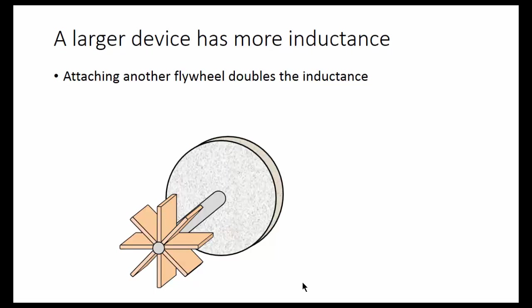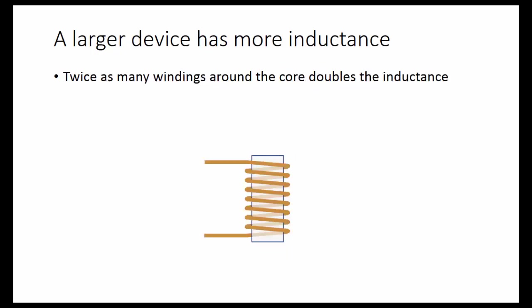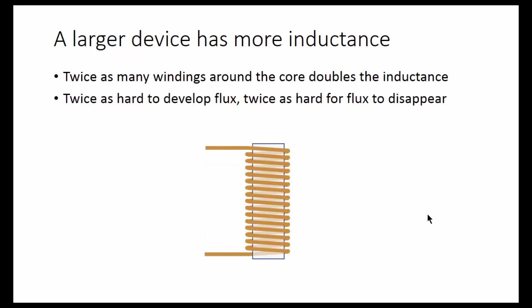A larger device has more inductance. For example, for this hydraulic inductor, if we extend the axle and put another heavy flywheel on, it doubles the inductance — it's twice as hard to get the flywheels moving and twice as hard to stop. Similarly, for the electronic inductor, twice as many windings around the core doubles the inductance — that's twice as hard to develop flux and twice as hard for the flux to disappear.